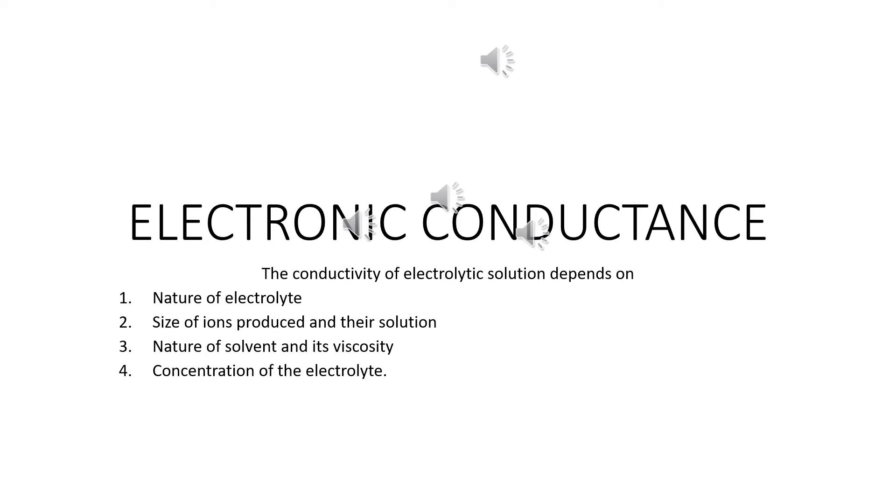Good evening friends. In the last class we studied conductance of electrolytic solution. Under this we studied electrolytic conductance also. Today's class we are going to discuss electronic conductance. Electrolytic conductance is the flow of electricity takes place due to the movement of electrons. That is, the flow of electricity is due to the movement of ions present in the electrolyte. Generally, pure water has low conductivity. Why? Because there is no ions present in it. But when electrolytes are dissolved in water, the ions of the solute particles will move freely in the solution, so its conductivity will increase.